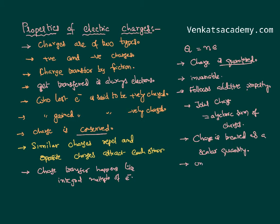Charge is measured in a unit called the Coulomb. To find the dimensional formula of charge, we use the definition of current: current is the rate of flow of charge, so q equals i times t. Since current i is measured in amperes and time t in seconds, the dimensional formula of charge is expressed as [IT].